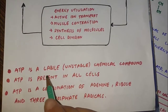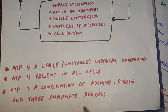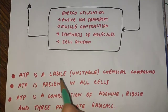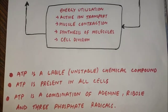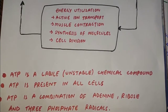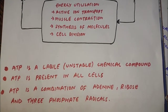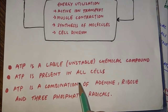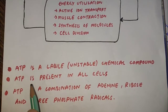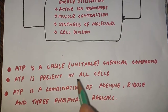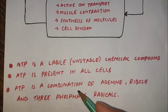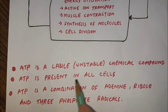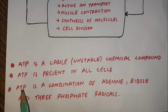ATP is a labile, unstable chemical compound. In order to attain stability, it will undergo breakdown. ATP is present in all cells — whether in the nucleoplasm or cytoplasm of the cell.